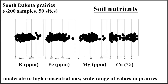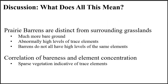Unlike the trace elements, the nutrients are not only orders of magnitude more abundant, but also more widely distributed, with concentrations varying greatly in both prairie habitats and in barren habitats. So, what does this all mean? When it comes to soils, prairie barrens are distinct from surrounding grasslands. They have abnormally high levels of trace elements, but not all barrens have high levels of the same elements relative to each other. They also have much more sparse vegetation. Furthermore, the percentage of bare ground found at a site strongly correlates with concentrations of trace elements, meaning that sparseness of vegetation is a reliable indicator of abnormally high levels of trace elements in soil.